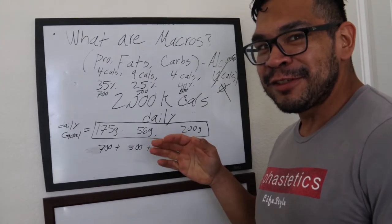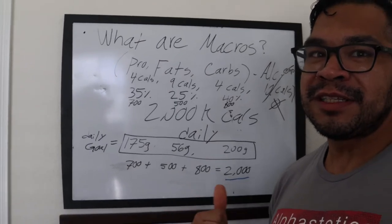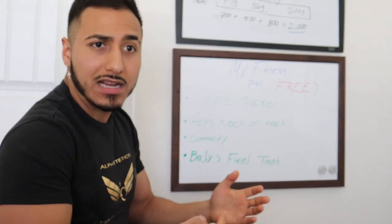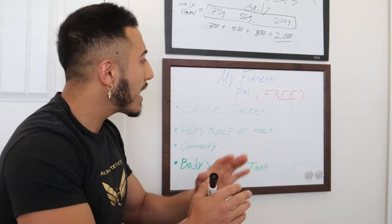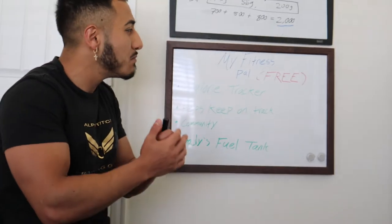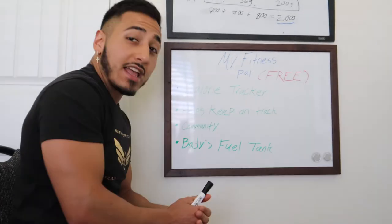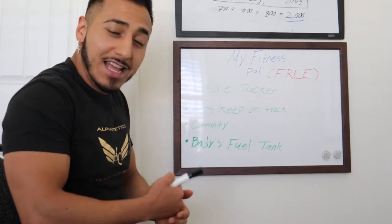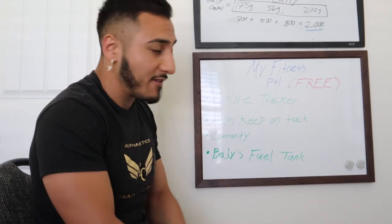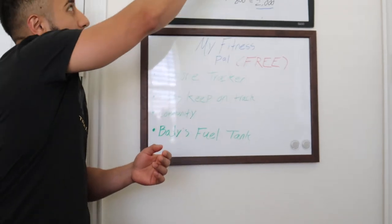We're personal trainers, not the best at handwriting, but stay tuned — we're going to talk about how MyFitnessPal helps you hit these numbers. There are other apps like Fat Secret, but we like MyFitnessPal because it's super easy to use, the most user-friendly app, and one of the biggest — owned by Under Armour. This is not a paid advertisement; the app is free. Anyone with a smartphone can use it. In short, MyFitnessPal is a calorie tracker that helps you stay on track.